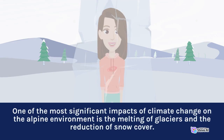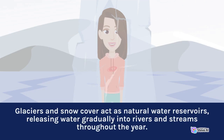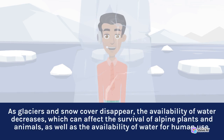One of the most significant impacts of climate change on the alpine environment is the melting of glaciers and the reduction of snow cover. Glaciers and snow cover act as natural water reservoirs, releasing water gradually into rivers and streams throughout the year. As glaciers and snow cover disappear, the availability of water decreases, which can affect the survival of alpine plants and animals, as well as the availability of water for human use.